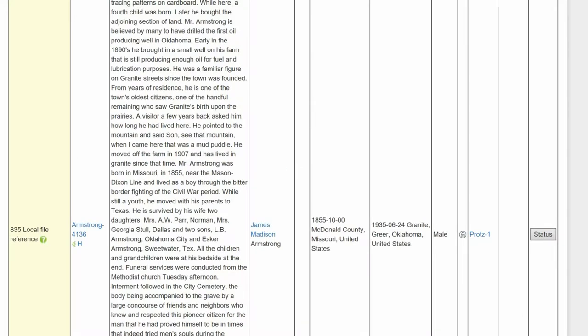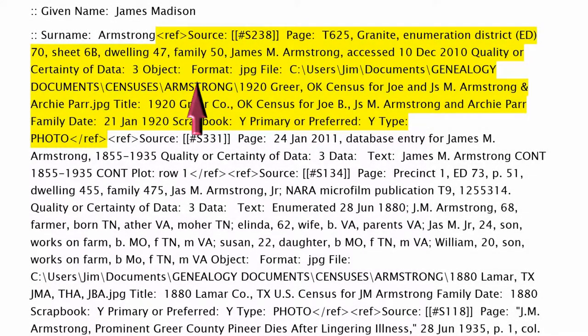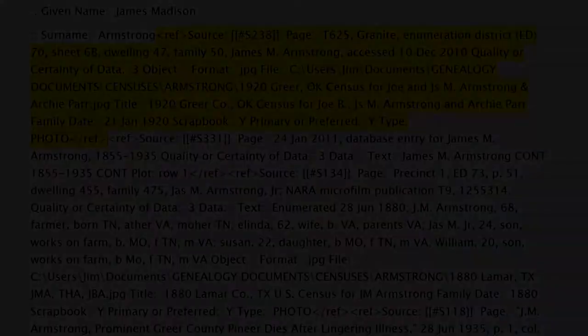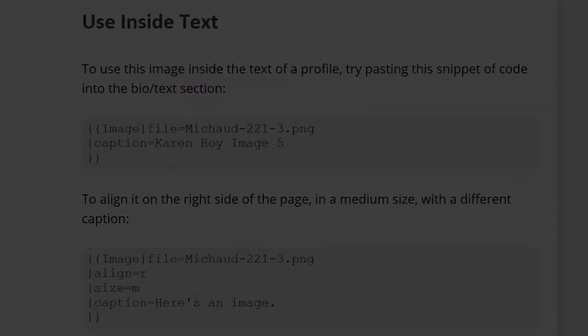Suggestion 835 means this profile links census record photos to a personal computer. WikiTree does not support such links, and no one but the profile manager can see the photos. These links either need to be removed, linked to an online source, or images with no copyright issues added to the profile.